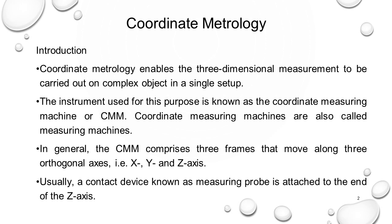Suppose if you want to measure a radius of an object — radius can be measured from the equation of a circle. Three points make a circle, and if you know the three points, we can easily calculate its radius and center. That principle is applied in CMM. The probe will touch three points on the periphery of the product and immediately its radius will be calculated and displayed.